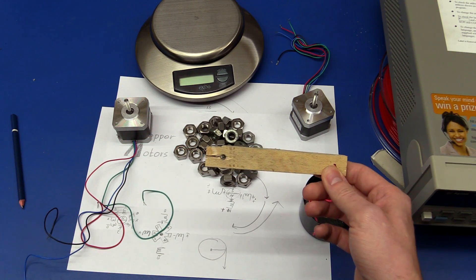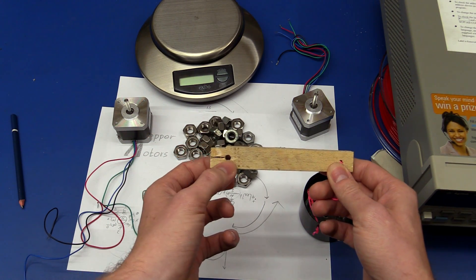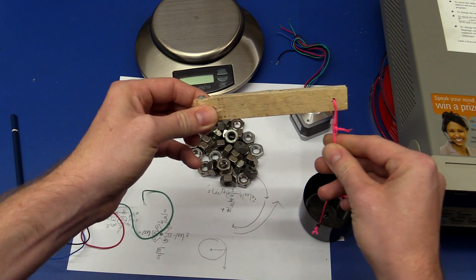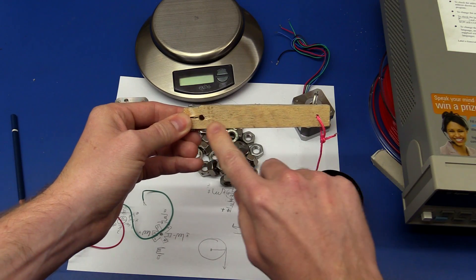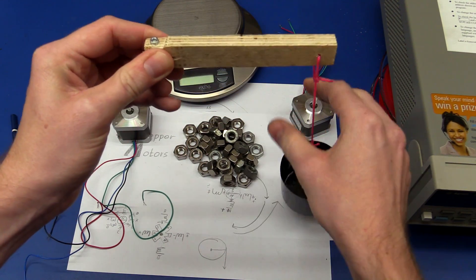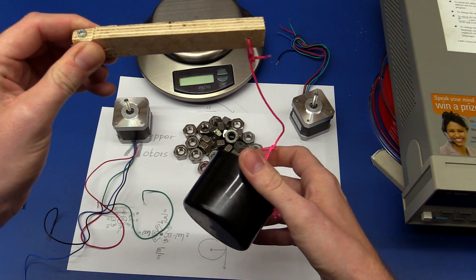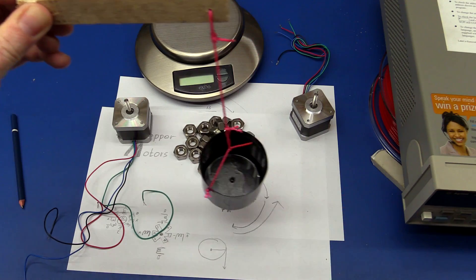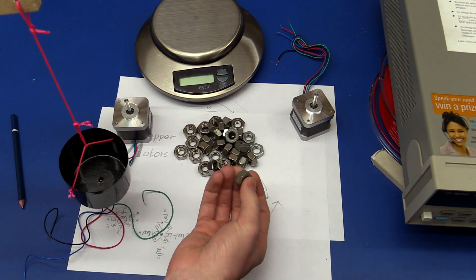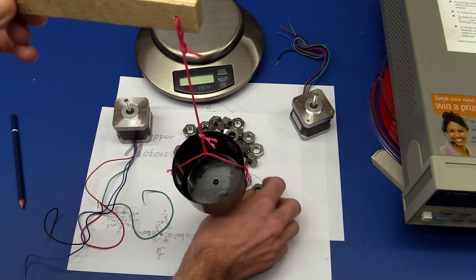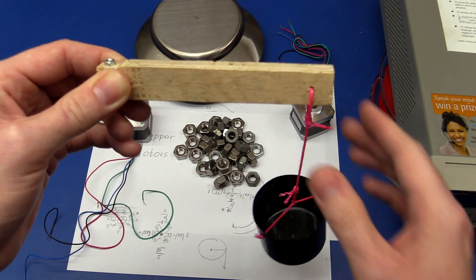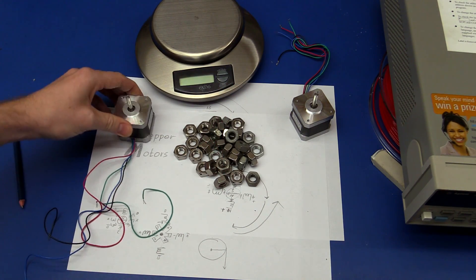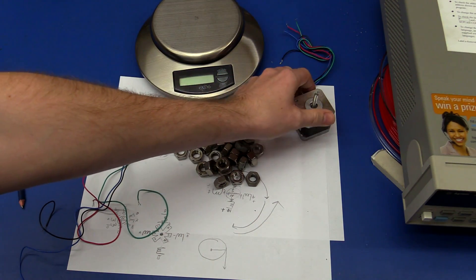So to do that I made this piece of wood, where we can put the axle of the motor, and then clamp it tight. Then 10 centimeters from this hole we have another hole with a string in it, and we have this lid from a spray can. And then we can use these calibrated masses to make a very scientific test, to see if this motor has any less torque than this motor.